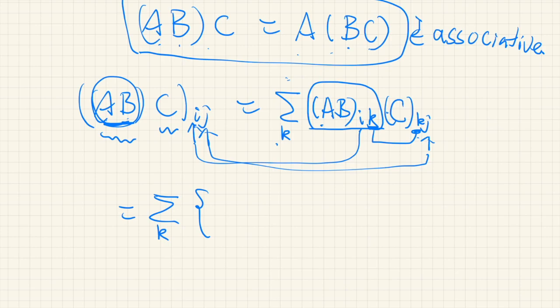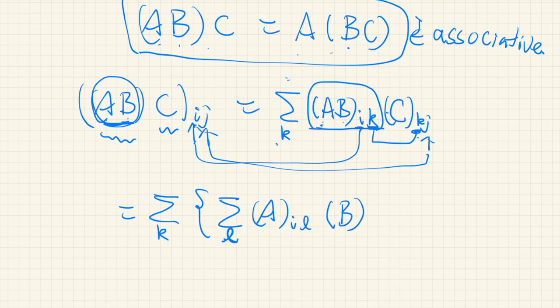This is the IK element of matrix AB. So that should be: sum over L, index L. A is IL, and B is LK — so L and K here. Then we have C, K, J.